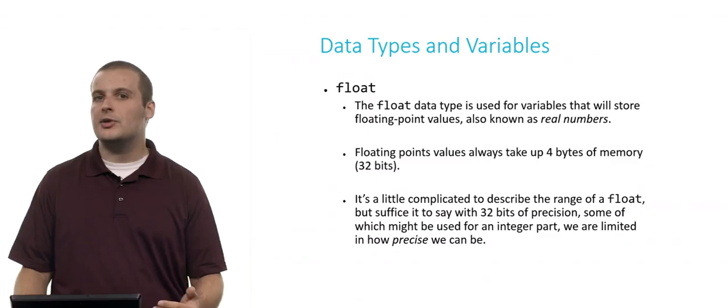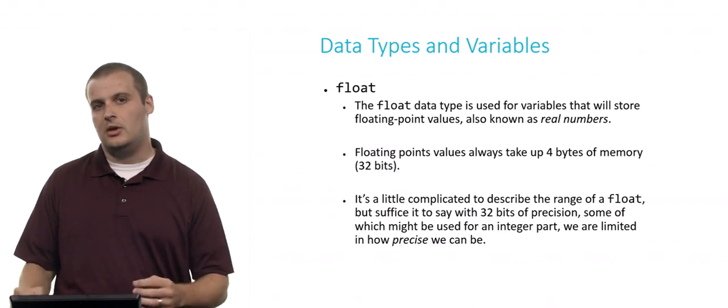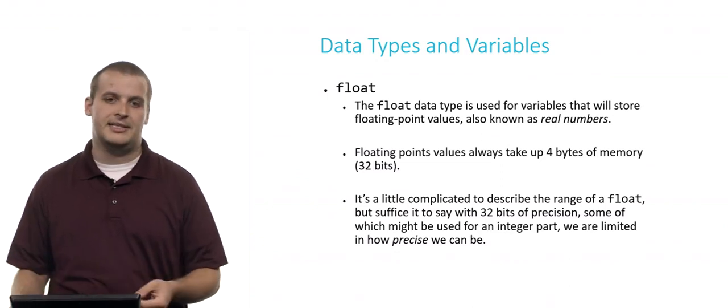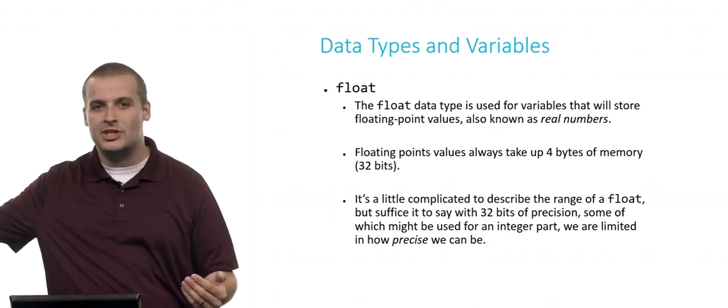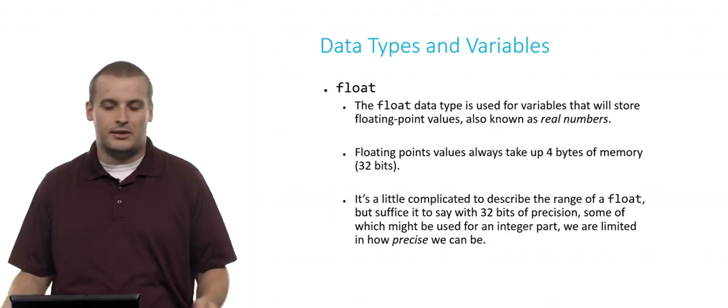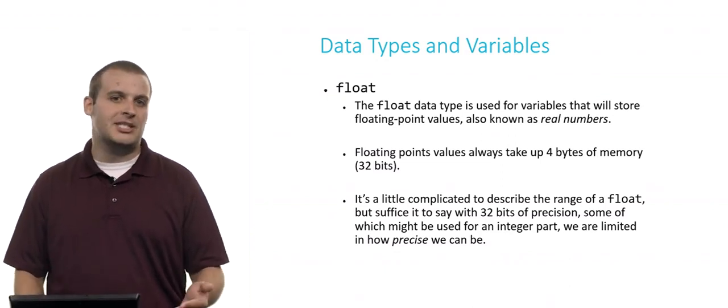So what do you think that might mean? One thing is that if the decimal part gets longer and longer, and if I have a very large integer part, I might not be able to be as precise with the decimal part. And that's really the limitation of a float. Floats have a precision problem. We only have 32 bits to work with, so we can only be so precise with our decimal part. We can't necessarily have a decimal part precise to 100 or 200 digits, because we only have 32 bits to work with. So that's a limitation of a float.